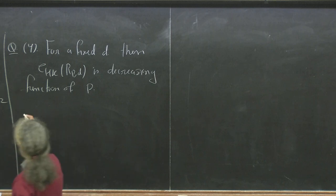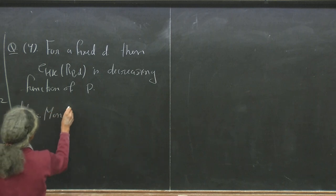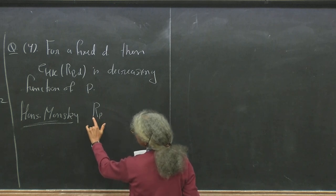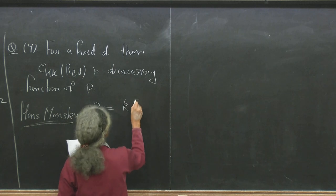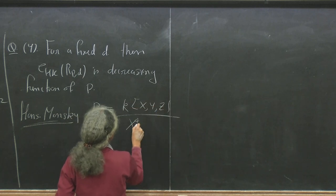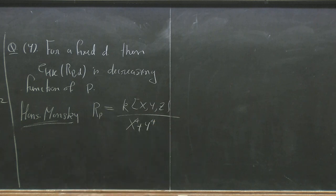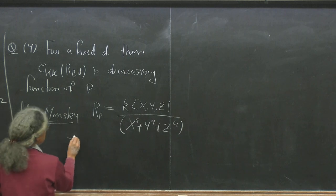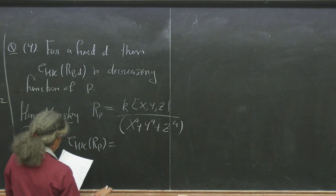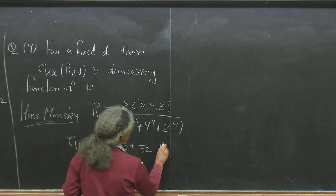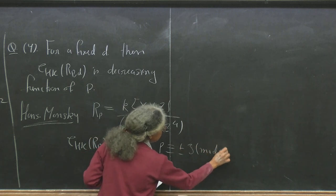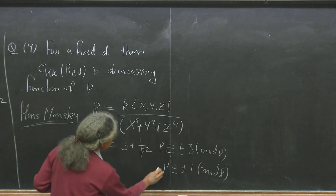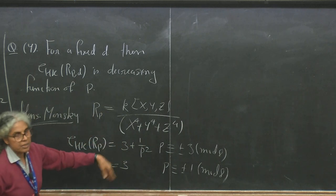There is also a question — I believe by Yoshida — asking whether, if we fix a dimension D, the HK multiplicity EHK of R_P^D is a decreasing function of p. One motivation comes from the famous examples of Hans and Monsky. For R_P with characteristic p, if I take the Fermat quartic x^4 + y^4 + z^4, then EHK of R_P equals 3 + 1/p^2 if p ≡ ±3 mod 8, and something else otherwise. So the function oscillates as p varies.